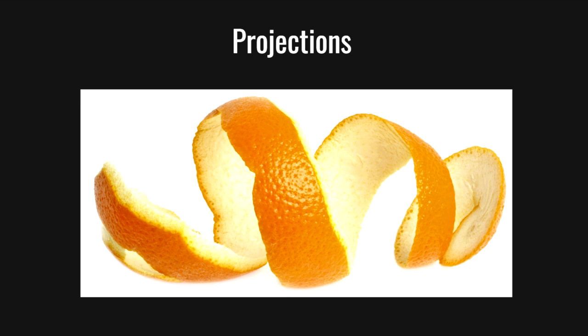When we think of maps, we typically imagine a flat two-dimensional representation of the Earth. However, the Earth is actually a sphere, and translating that three-dimensional shape onto a flat surface is not an easy task. It is similar to flattening an orange peel and it can't be fully flattened without some sort of distortion. That's where map projections come in — they allow us to take information from the Earth's surface and present it in a way that's easy to understand on a flat map.